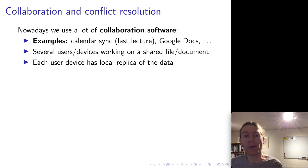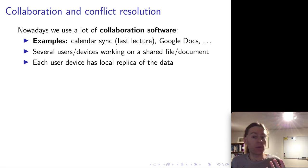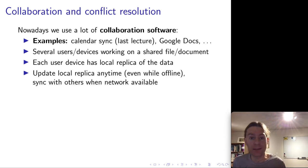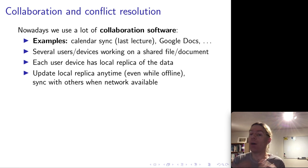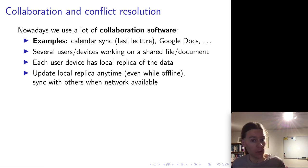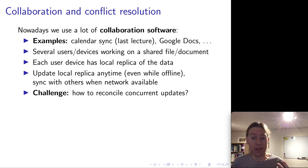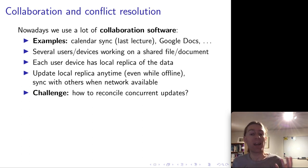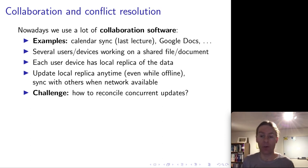What these applications have in common is that there are several users, each user using some device to access some shared file or document or database. Each of these devices has its own local copy of the data that it's working on — we can call it a replica of this shared data. Each user is able to update their own replica, be it in their web browser or in a mobile app. The user can update this data anytime, even if they're disconnected from the internet, ideally. And then sometime later, when they have an internet connection again, they will sync back with the server and with any other clients. The challenge is reconciling concurrent updates and making sure that everyone ends up in a consistent state.